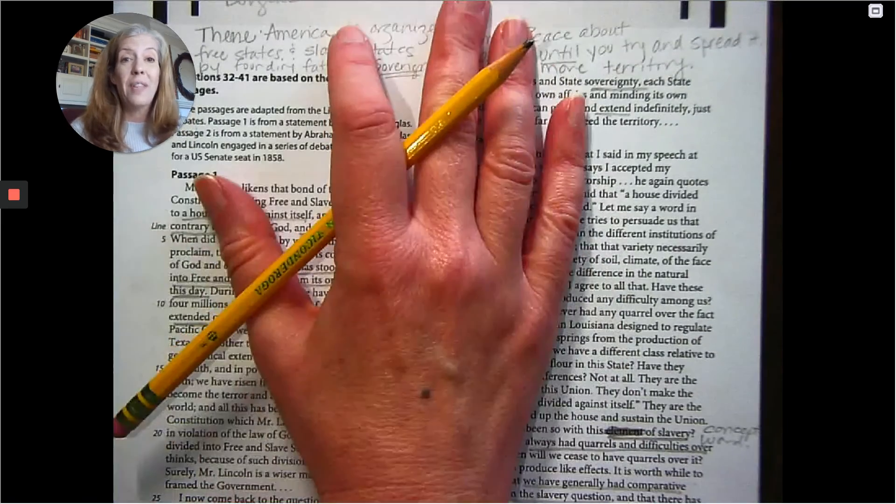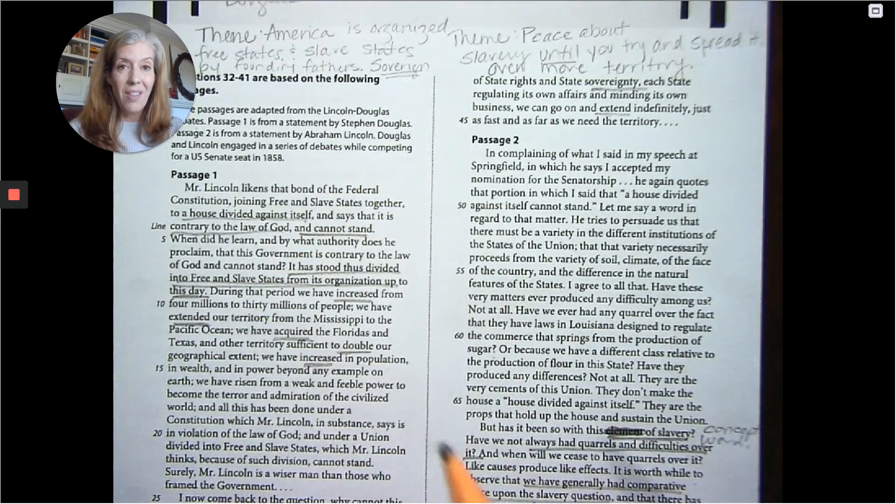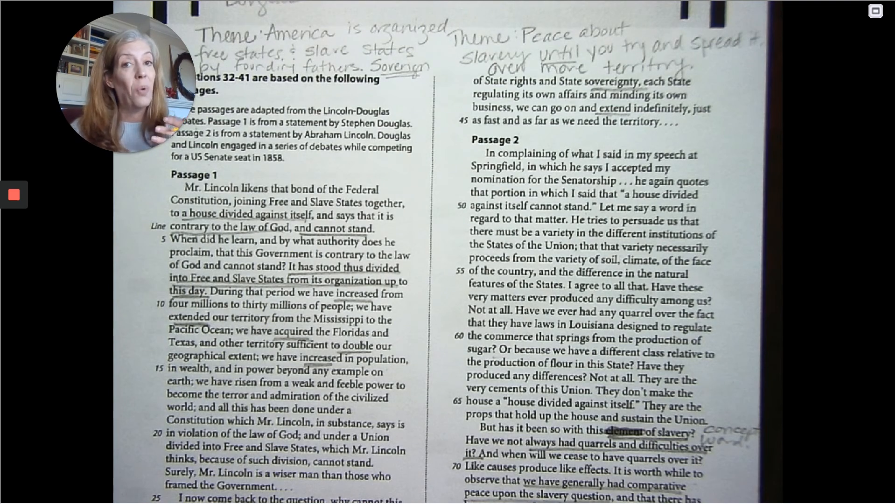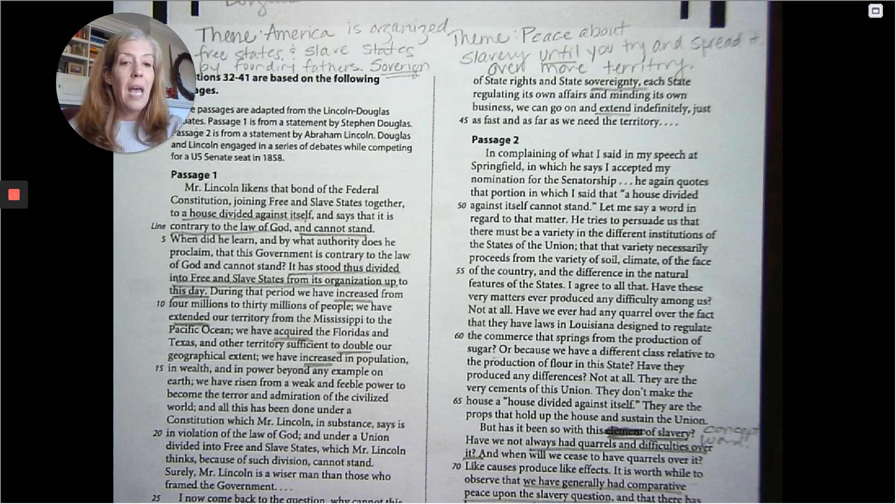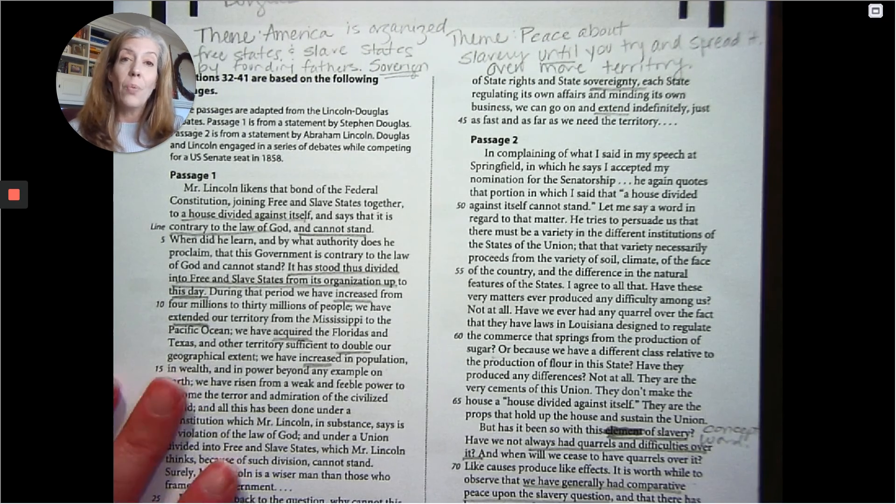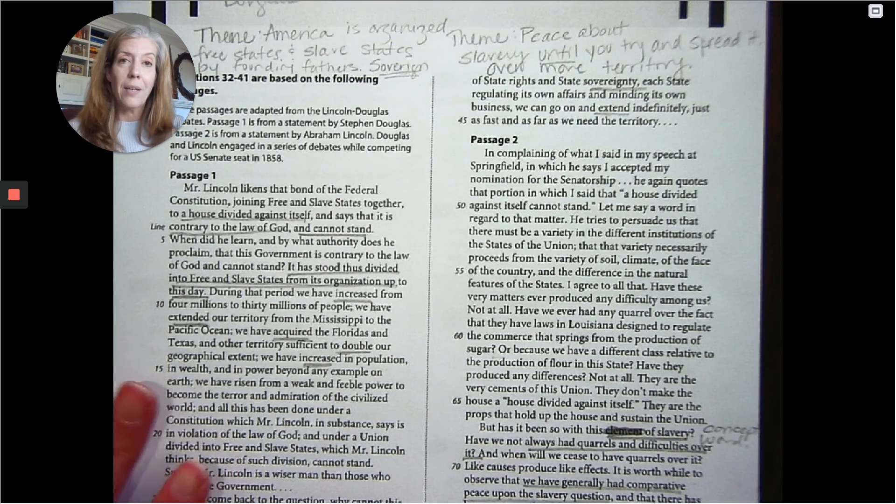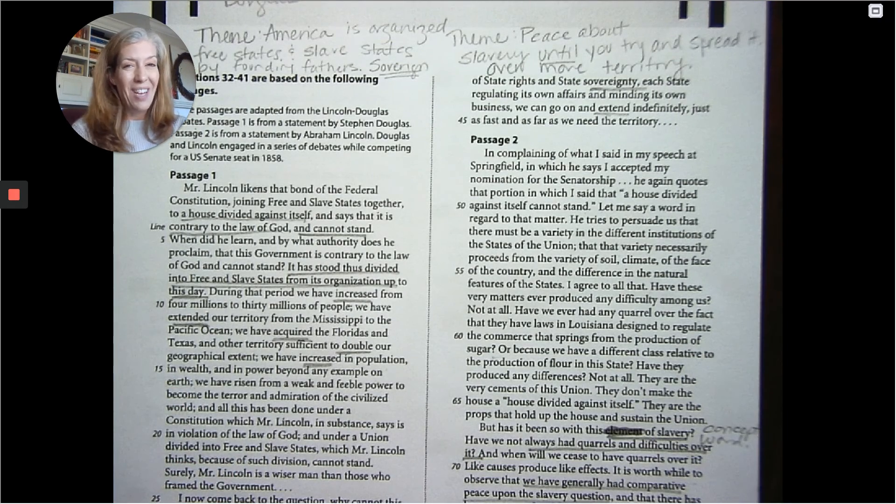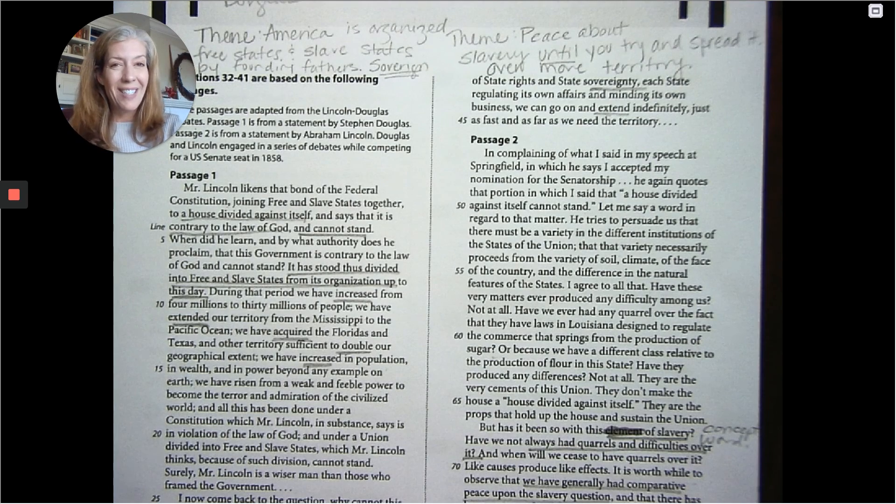And that's it for passage one and passage two. Again, once we read for theme, we're just matching the theme to the answers. I hope you're starting to see that. I hope you're starting to feel more confident in doing that. And always, of course, we're really reading, active reading, marking the text so that we can predict what the questions are going to be. That was fun. Let's see what the next section is.